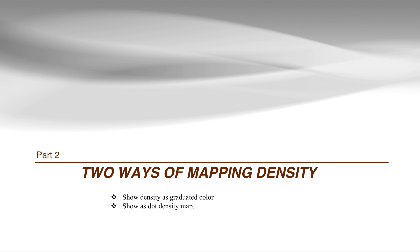After we calculate the density value, we are ready to show it as a map. There are basically two common ways to show density as a map. One is to use graduated color applied to either uniform grids or irregular shapes like census tracts or counties. The second way is to show the density as dots, where each dot represents a number of the distribution.